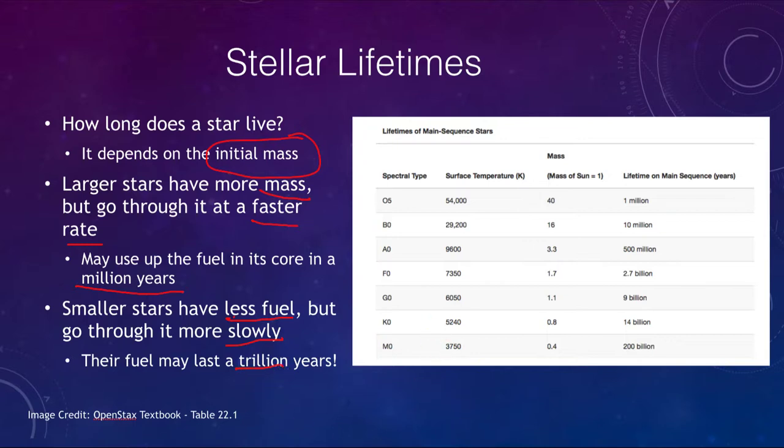So the table here shows us various types of stars going from a very hot class O star down to a very cool class M star. We can review their temperatures, we can see roughly what their masses are. And you note that it's not a tremendous difference in mass, that it goes from 0.4 for an M zero star to 40 for an O five star. So it is a factor of 100 times in the mass. However, the change in the lifetime is much, much more. That O star may only live for one million years, and the M star may live for 200 billion years.